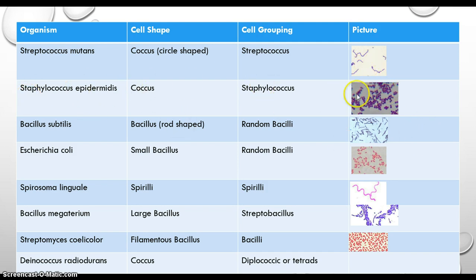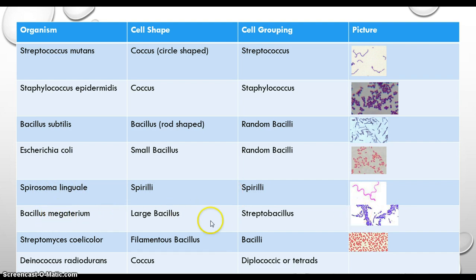Staphylococcus epidermidis is a Staphylococcus, and you can see the groupings in the image. Bacillus subtilis shows random bacilli — pretty stereotypical rod shapes. Escherichia coli is similar but the rods are a bit smaller, so I put 'small bacilli.' Spirosoma or Spirillum are spiral-shaped. Bacillus megaterium — megaterium means they're larger — so these are large bacilli, though these images aren't all to scale. Streptobacillus actually forms chains of rods.